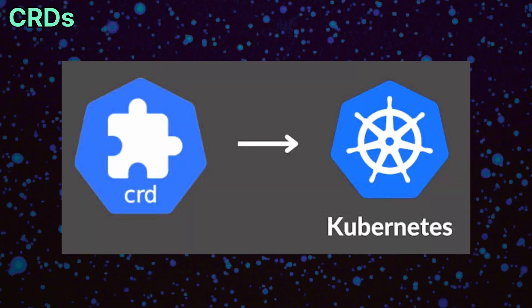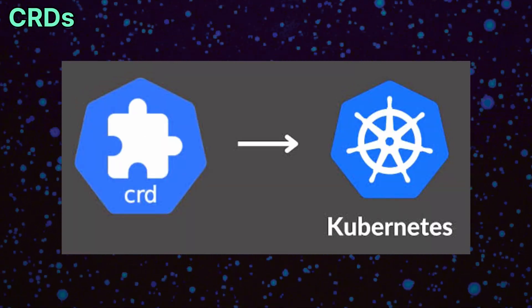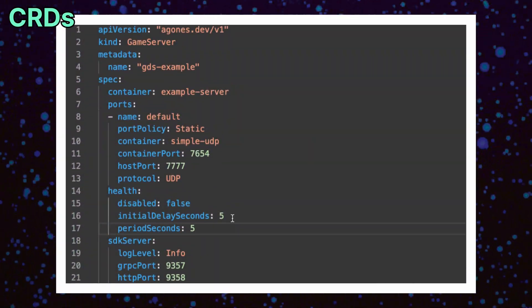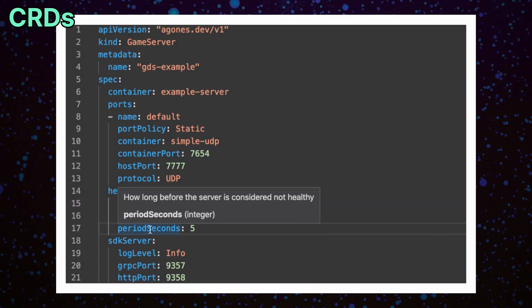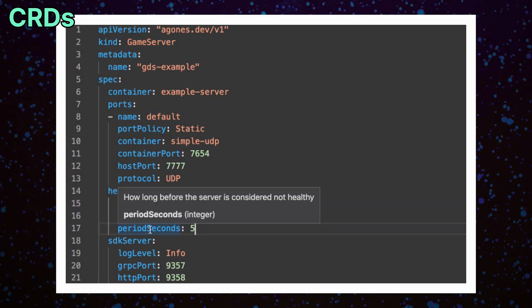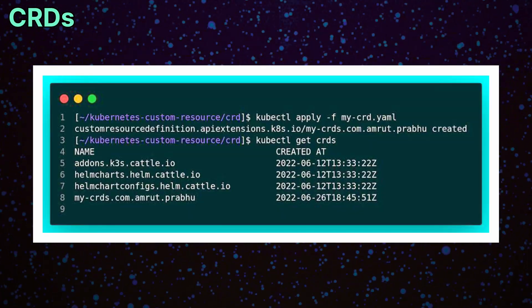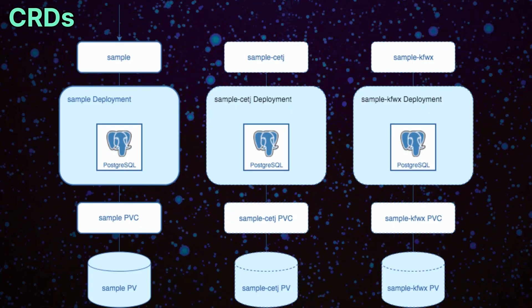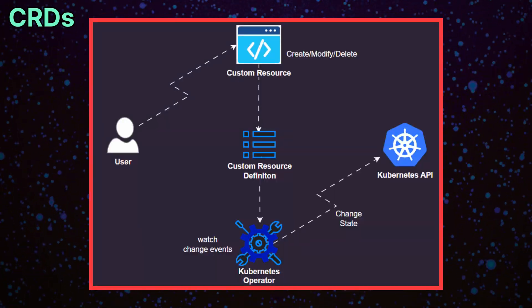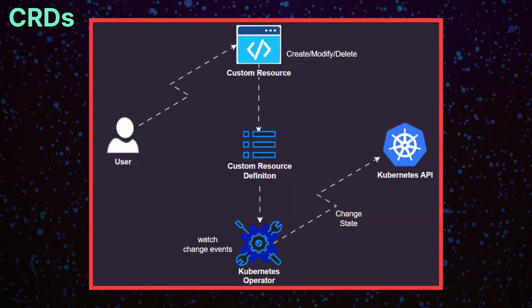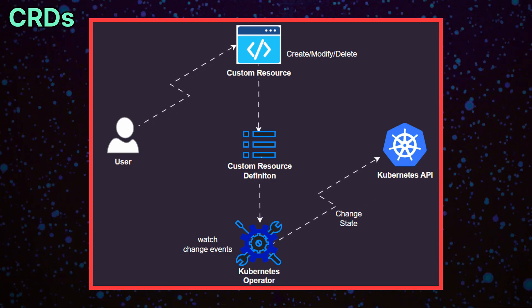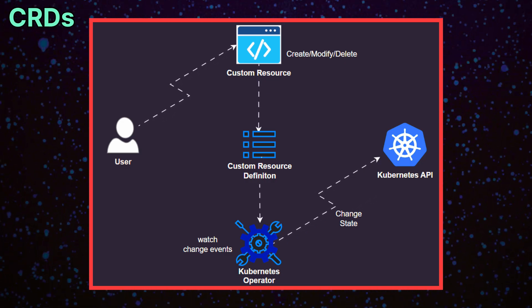Kubernetes can be extended through custom resource definitions, or CRDs. CRDs let you define your own object types beyond the default Kubernetes objects. Many operators, like Prometheus and Argo CD, use CRDs to add new features and perform operational tasks like backups, scaling, or configuration updates.